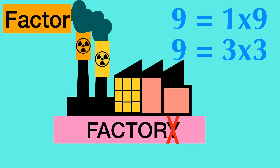The product 9 is also calculated when 3 and 3 are multiplied. 3 is a factor of 9. The factors of 9 are 1, 3, and 9.